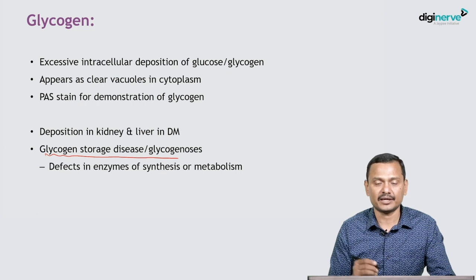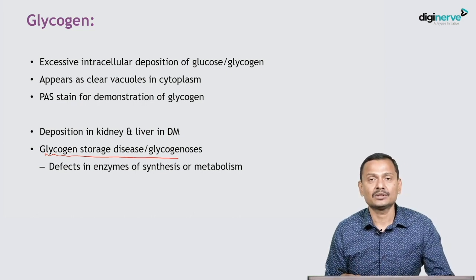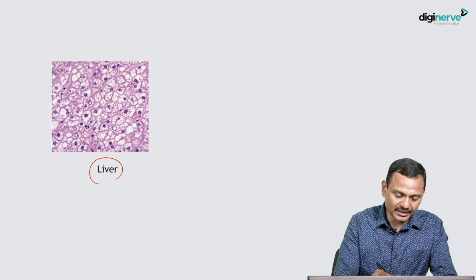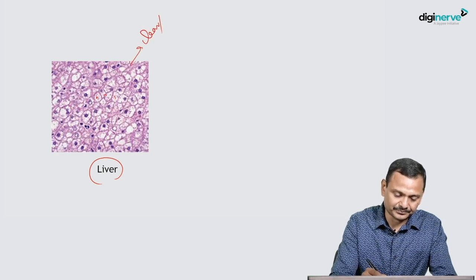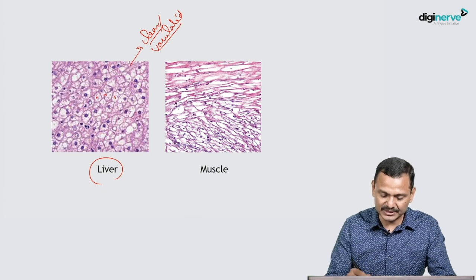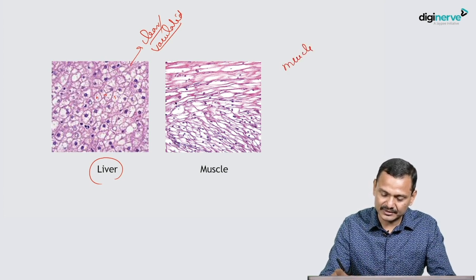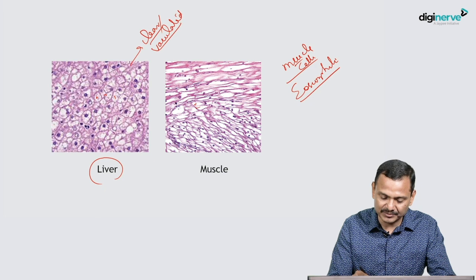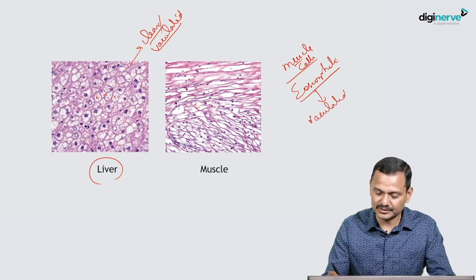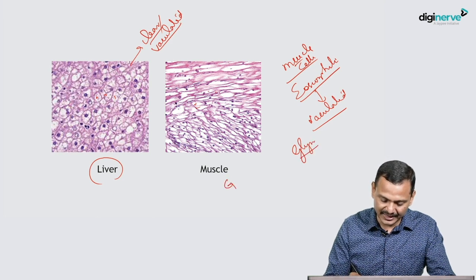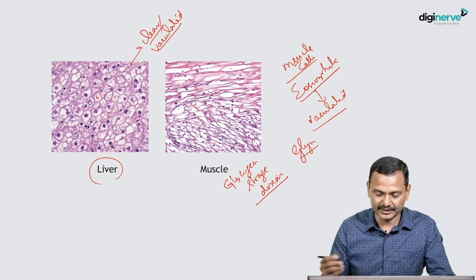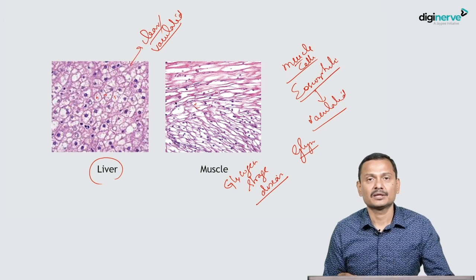Glycogen storage disease will be separately discussed under childhood storage disorders. In the liver, the cytoplasm appears very clear to vacuolated — we cannot know whether this is lipid or glycogen without a special stain. In muscle cells — which normally have eosinophilic cytoplasm — the cytoplasm appears vacuolated, indicating glycogen deposit, leading to glycogen storage disease.